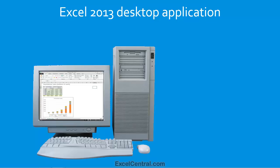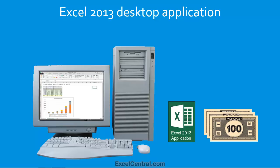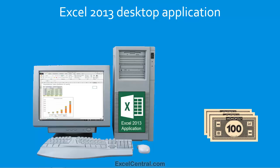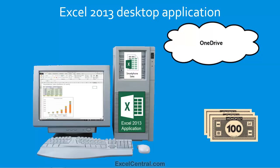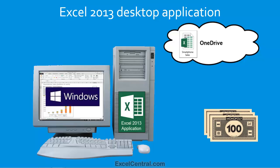The regular desktop application that we've been using for years requires you to first purchase a license, and of course that involves spending some money. Once you've purchased the license, you need to install the application onto the hard drive of your desktop computer. Normally, when you work with a desktop computer, you'll save your files to the hard drive on the computer, though with the new Cloud features, you might instead choose to store your workbooks on the Cloud. As discussed in Lesson 8-3, the Excel 2013 application will only run on computers that are running the Windows operating system.